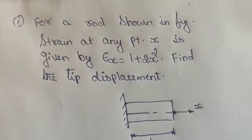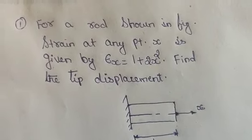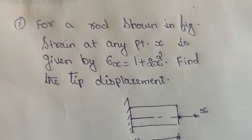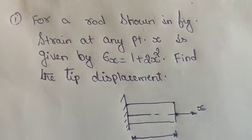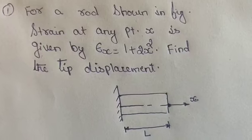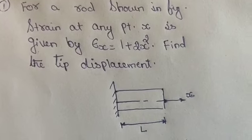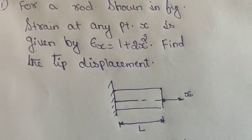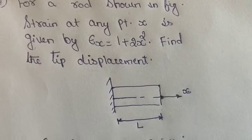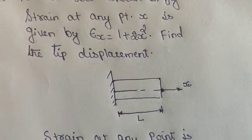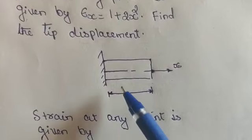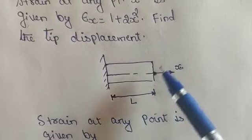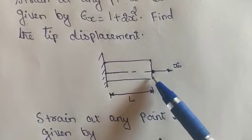Hello everyone, this is another problem. The statement of the problem is: for a rod shown in figure, strain at any point x is given by epsilon x equals 1 plus 2x squared. Find the tip displacement. This is the figure here. At one end it has been fixed, this is the tip here.